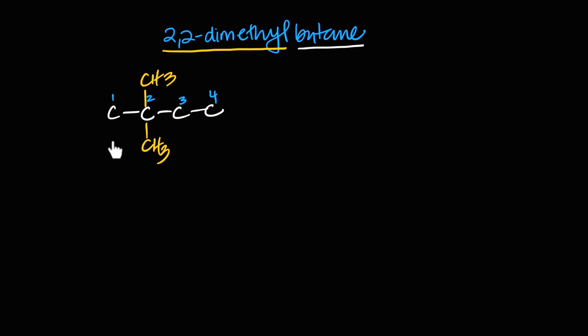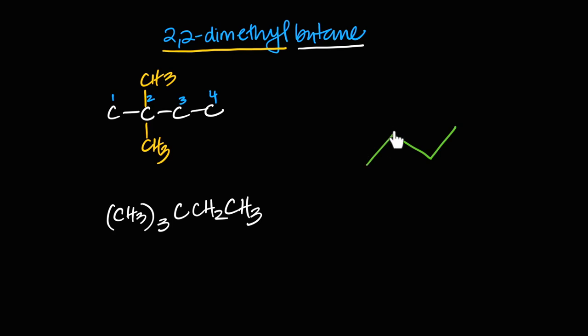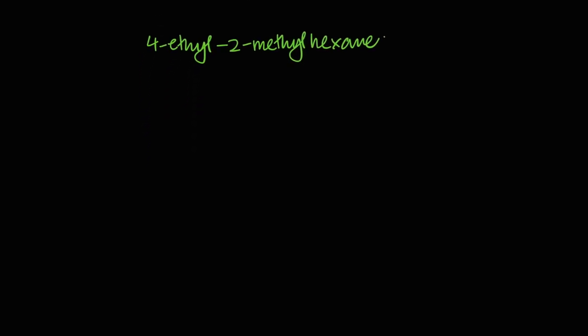In the structural formula for 2,2-dimethylbutane, carbon number two has two methyl substituents plus one methyl as part of the main chain — so three CH3 groups total, written as C(CH3)3, followed by CH2 for carbon three and CH3 for carbon four. The skeletal formula shows four carbons with two methyl groups on carbon two, one drawn on top and one slightly slanted to represent a tetrahedral layout.